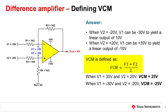The input common mode voltage, VCM, is the average of V1 and V2. For this specific circuit, VCM is equal to plus/minus 25 volts. The output voltage, Vout, for this specific circuit is plus/minus 10 volts. We can take these boundary points to generate what's called a VCM versus Vout boundary plot.